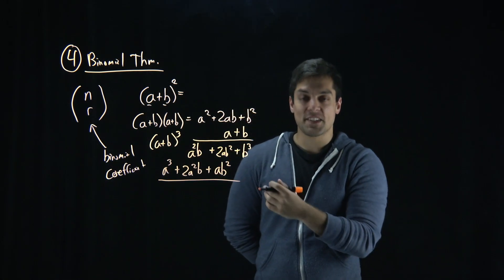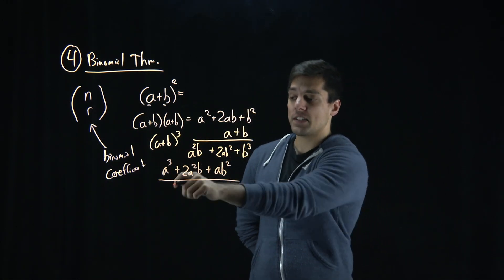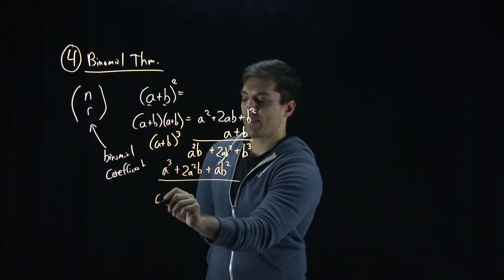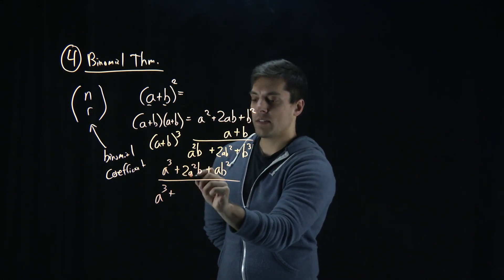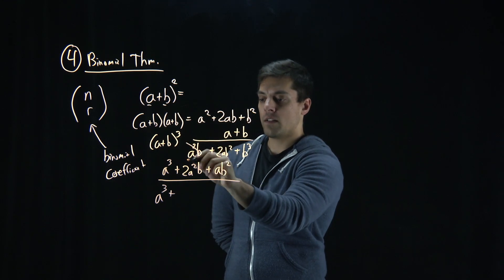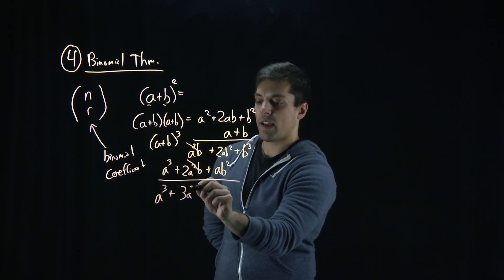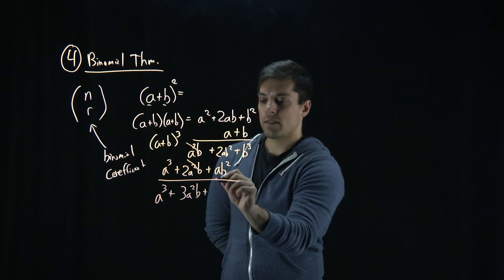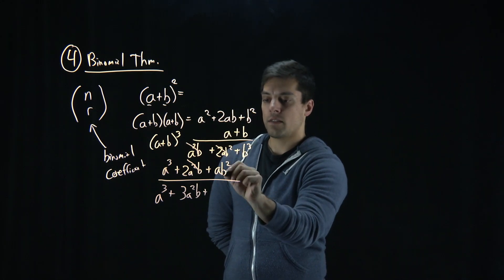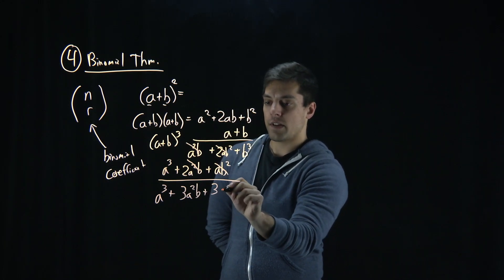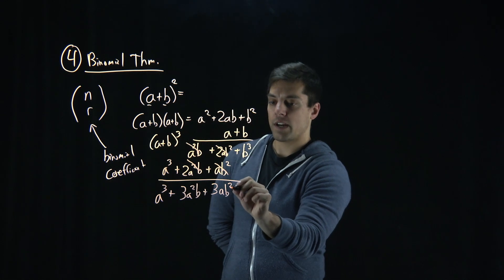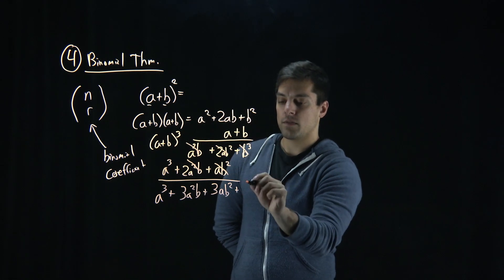And at this point, I'm starting to get a little bit exhausted, but we still have to add these terms in. So I have a cubed plus 2a squared b, a squared b gives us 3a squared b plus 2ab squared, ab squared, 3ab squared, plus our final b cubed.